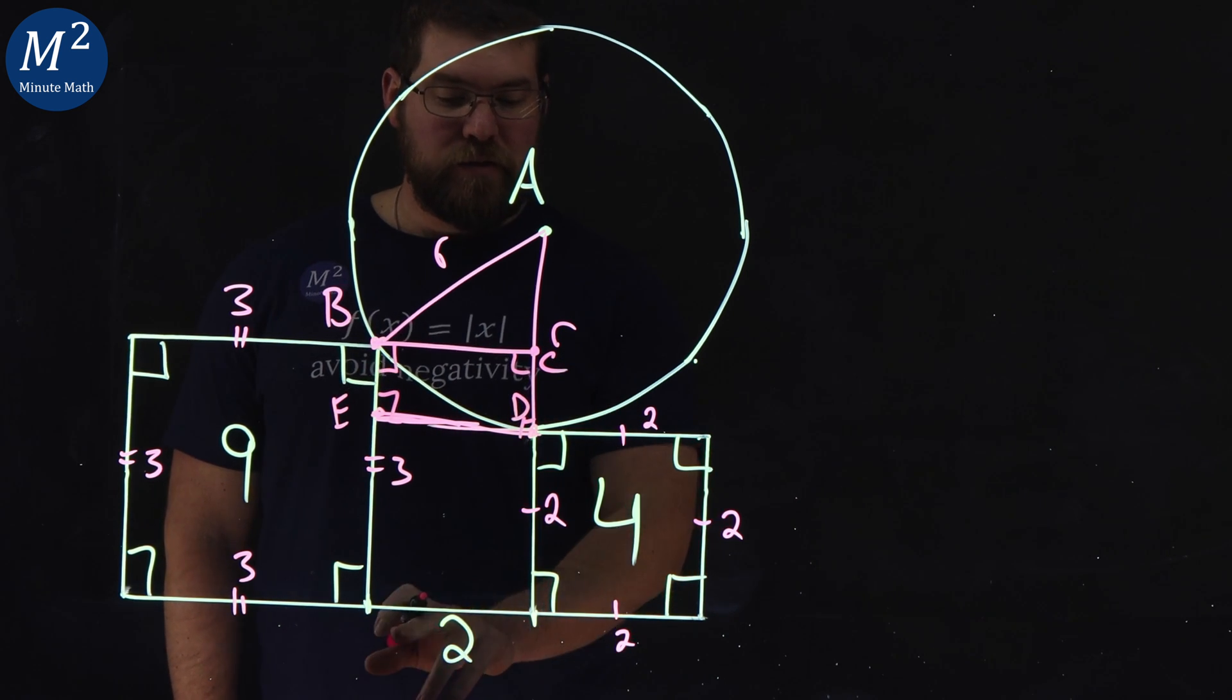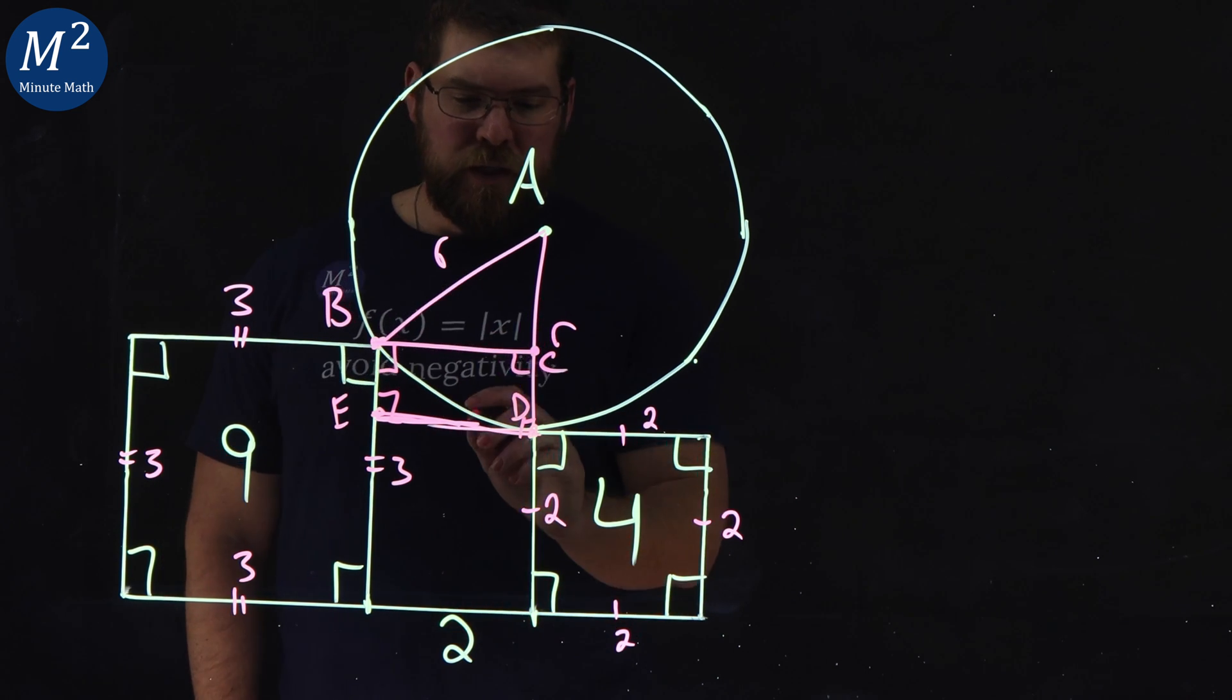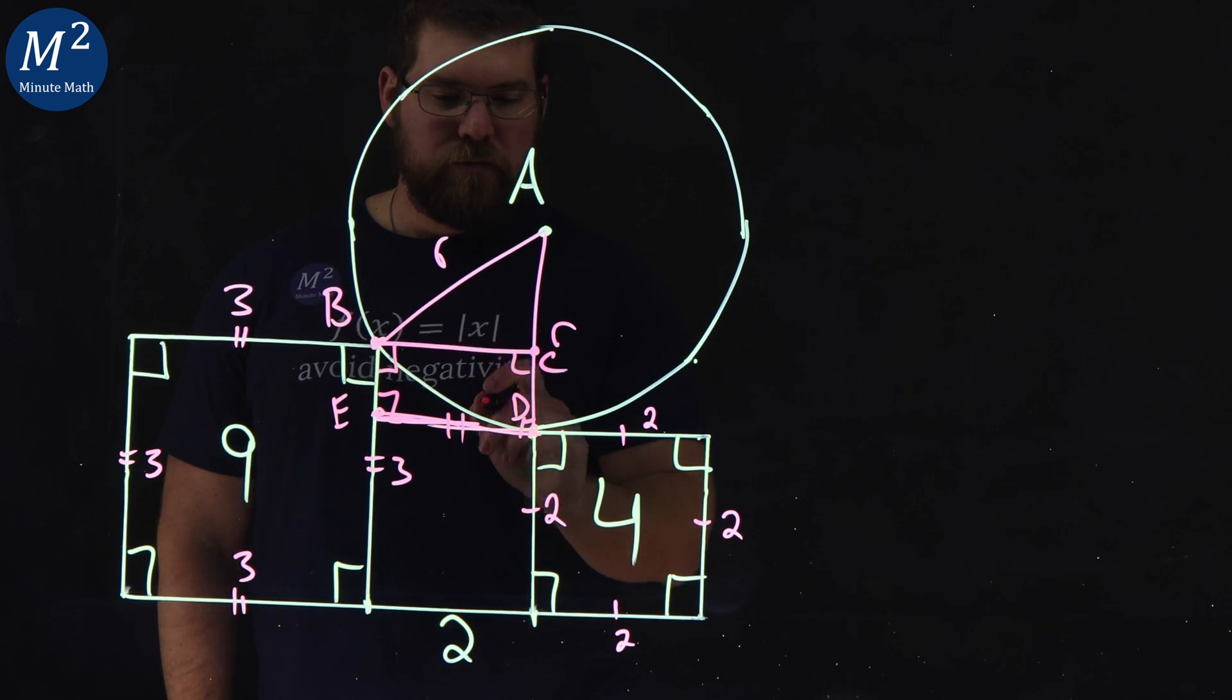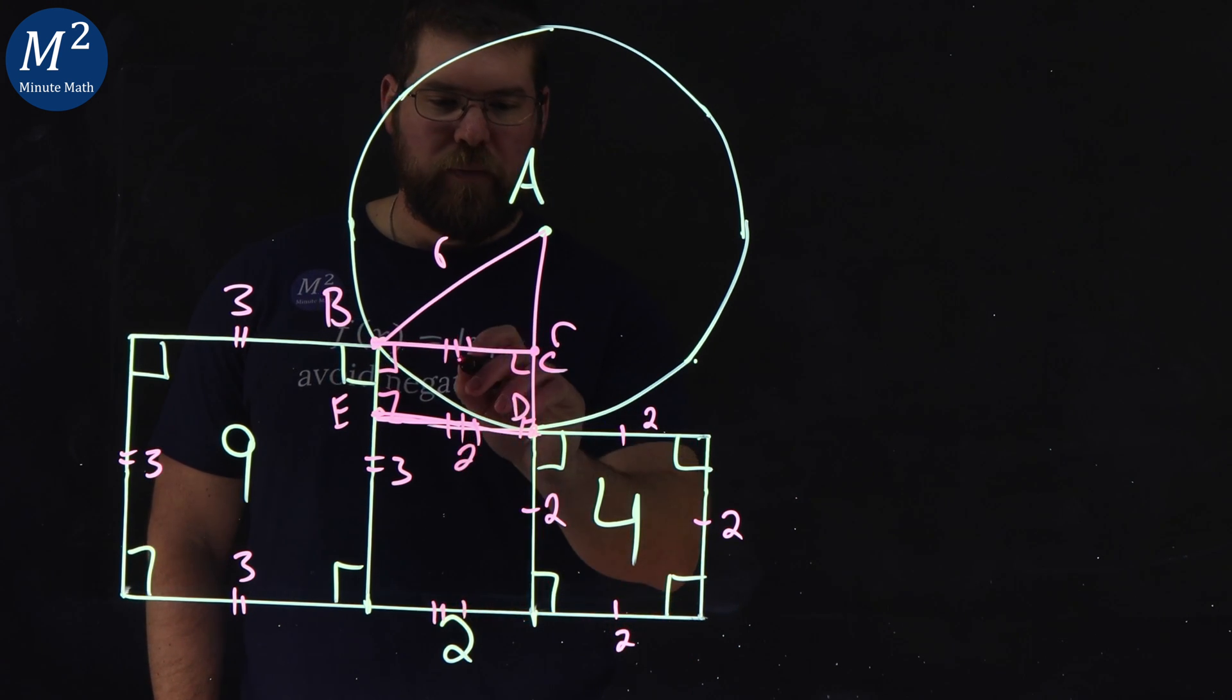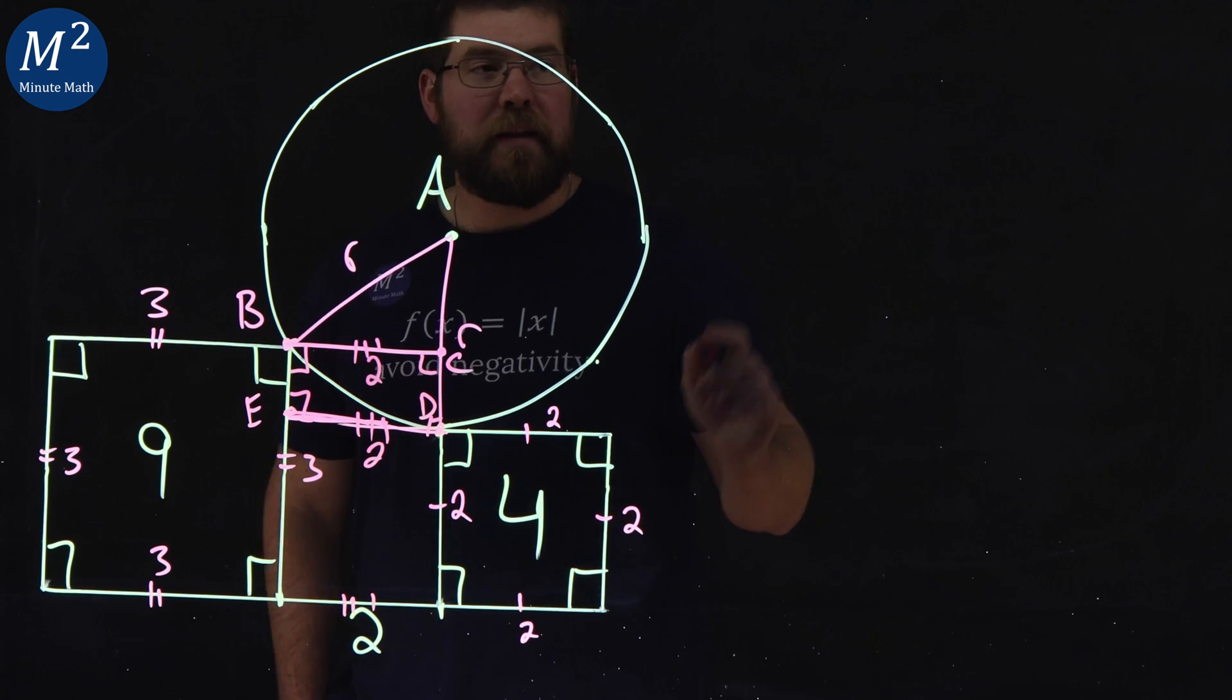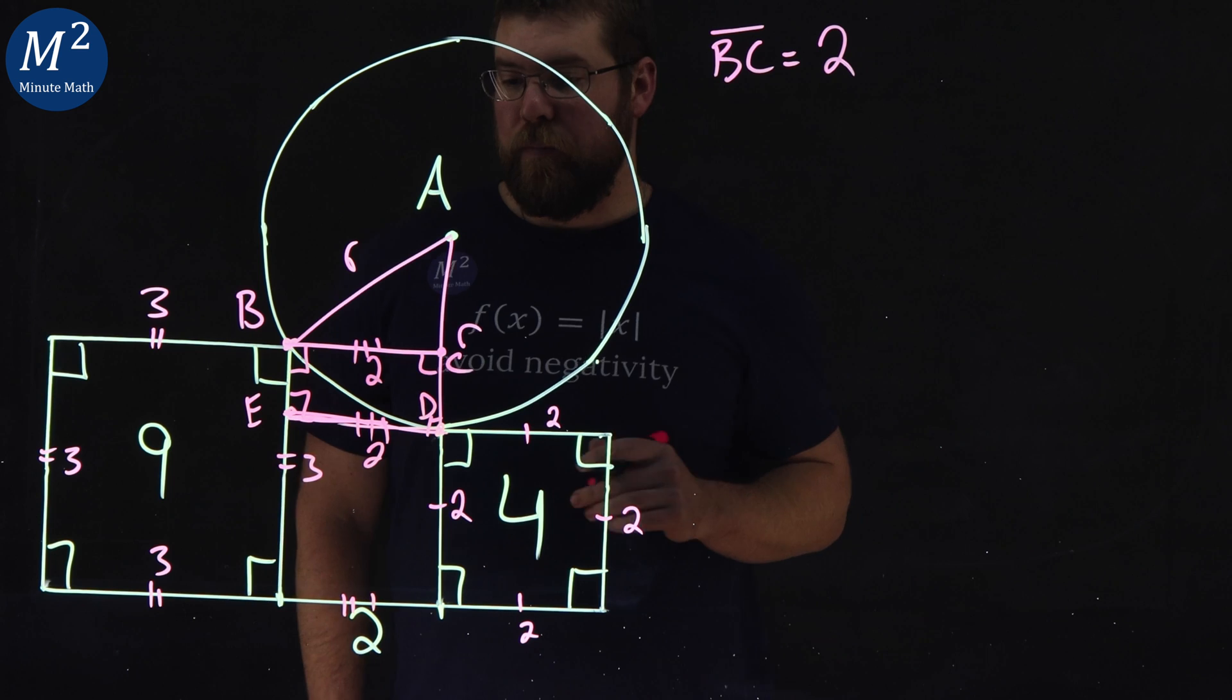This side length here is two, or this length here is two. These will be congruent. And so here, let's call it three across one, two, three, but this is two, we have two and two here. So we have the length of BC, we came up to B as two. That's nice.